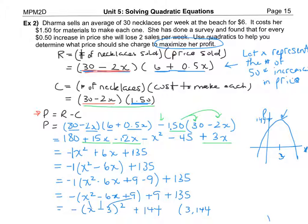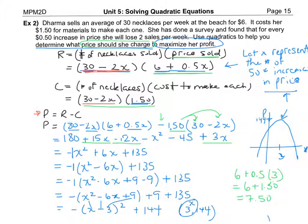But it says what price should she charge to maximize the profit. So x is the 3. Now we know x represents the number of 50 cent increases in price and we also know that the 6 plus 0.5x is the price that each one is sold for so we want to know what price should she sell them for what price should she charge so 6 plus 0.5 times the x that maximizes which is 3 will give us our correct answer for that that should be $1.50 extra so she should sell them for $7.50 to maximize her profit. Hopefully that helps.